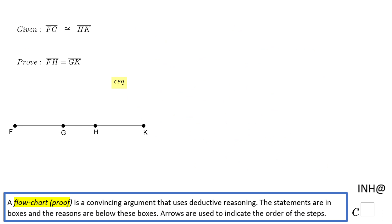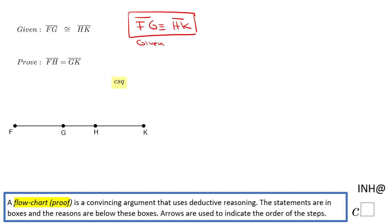A flowchart uses boxes and arrows. The first box you want to start with is what is given: FG congruent to HK. That's my first box, and below it you write the reason: given. From this statement, with an arrow, I can move to: the measure of segment FG equals the measure of segment HK. The reason is the definition of congruent segments.